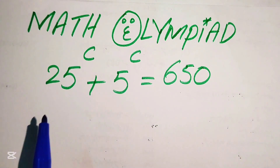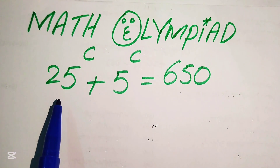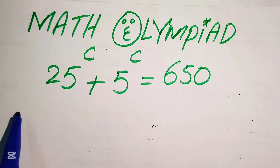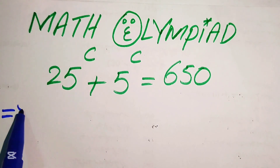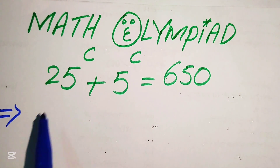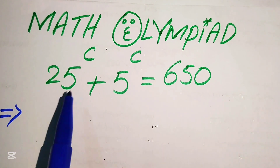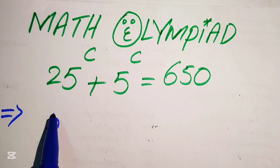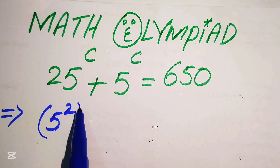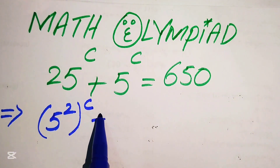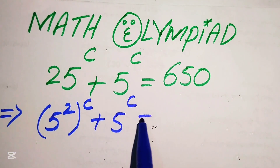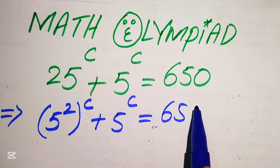Focus on the base of this term — the base is 25. We write 25 in prime factor form: the prime factors of 25 are 5 squared. So we replace 25 with 5 squared, giving us (5²)^C plus 5 to the power of C equals 650.